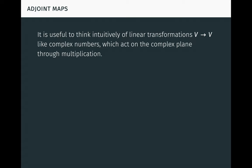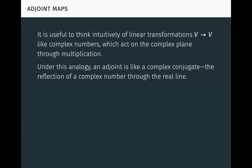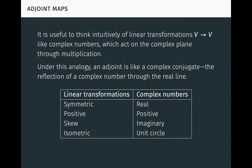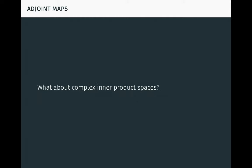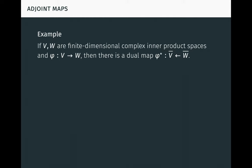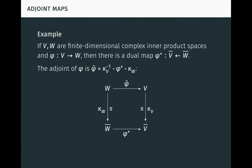In this context, it's useful to think intuitively of linear transformations on V like complex numbers, which act on the complex plane through multiplication. Under this analogy, an adjoint is like a complex conjugate, the reflection of a complex number through the real line. This analogy is strong and leads to important parallels between classes of linear transformations and classes of complex numbers, as seen in this beautiful table. What about complex inner product spaces? If V and W are finite-dimensional complex inner product spaces and phi is a linear map from V to W, then there is a dual map phi-star to V-conjugate from W-conjugate. The adjoint is just the conjugate of the dual by the conjugate linear identity maps, as seen in this commutative diagram. So in the complex case, the adjoint is almost the dual, like the inner product is almost the scalar product.